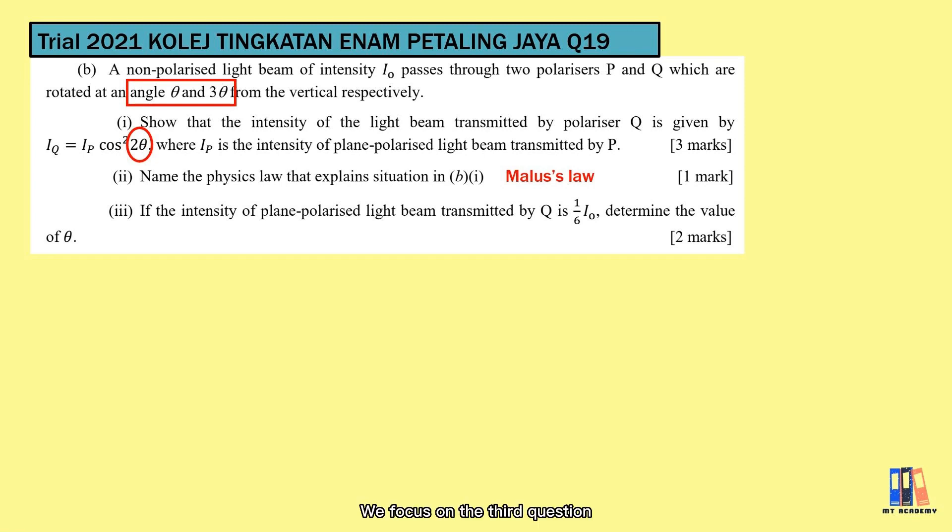We focus on the third question. If the intensity of the plane polarized light beam transmitted by Q is ⅙I₀, determine the value of θ. It refers back to the original intensity. What we can do is put in the equation that IP is half of original intensity. So this would be the overall equation for two polarizers. IQ needs to be ⅙I₀. Just put in the equation and solve it. The angle θ here is 27.4 degrees.